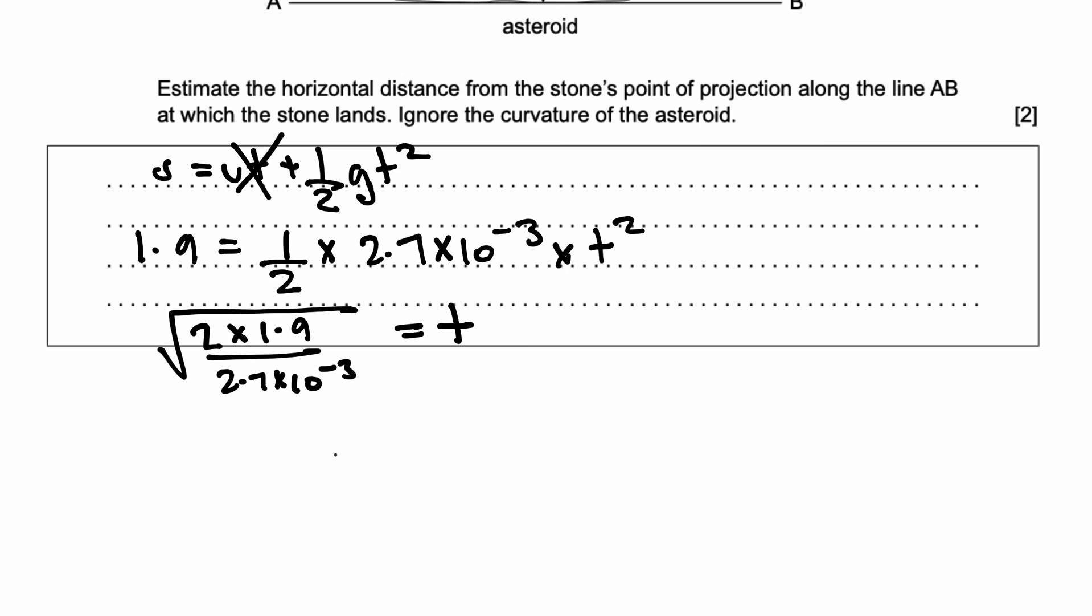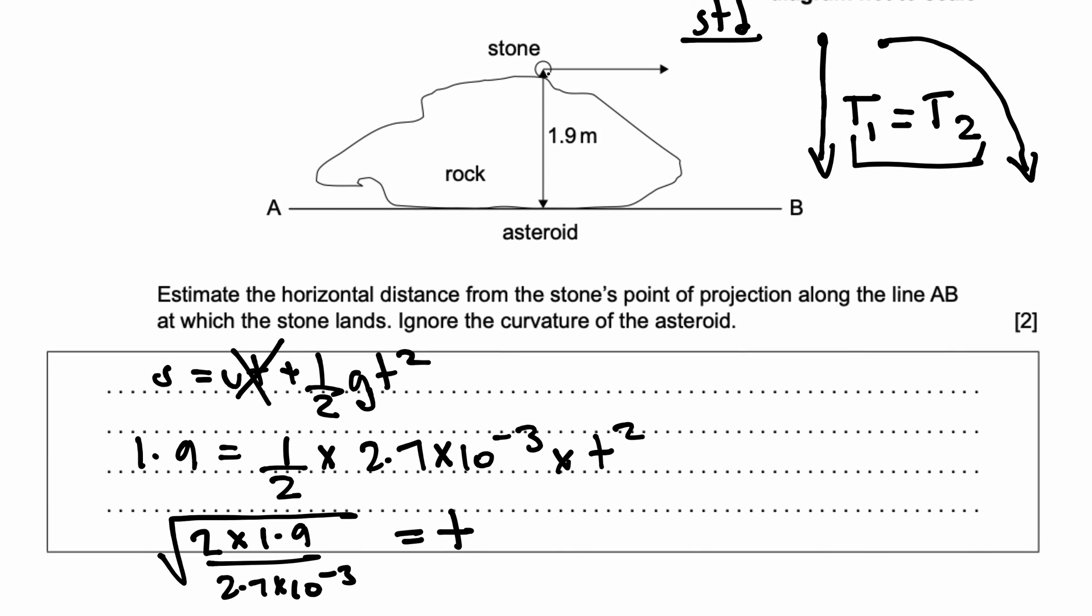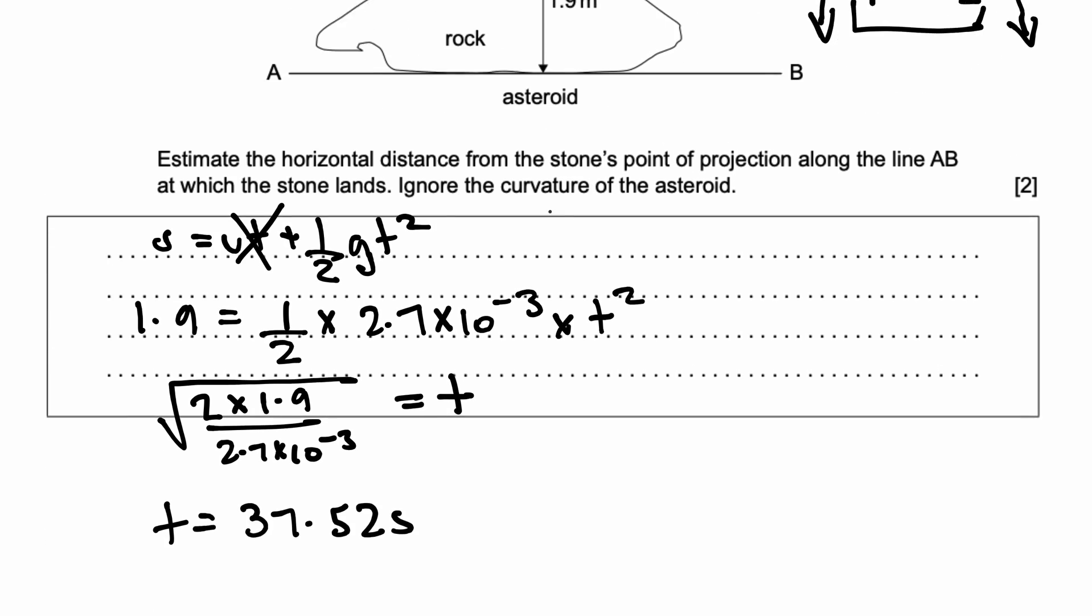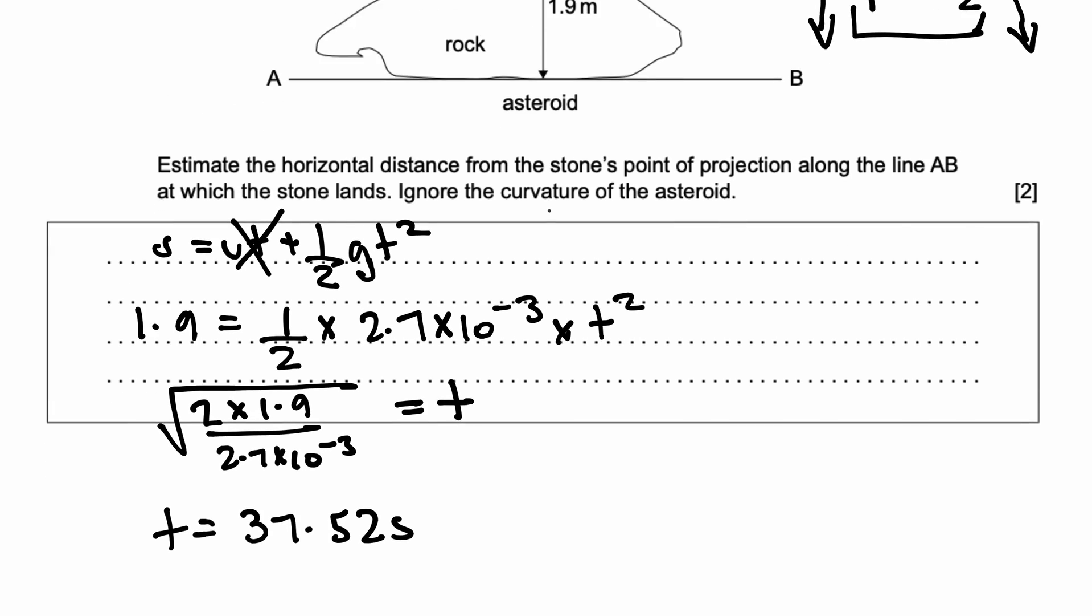What is time exactly equal to? Let's find out. Let's put this on our calculators. 2 × 1.9 over 2.7 × 10^-3. I get the time for the rock to fall down is 37.52 seconds. That's the time it takes for the stone to fall from the top of the rock to the bottom.